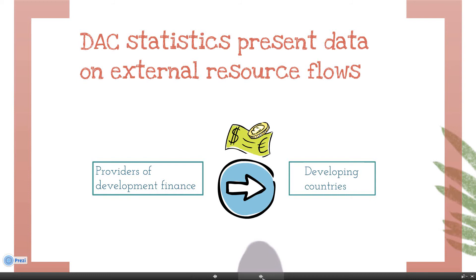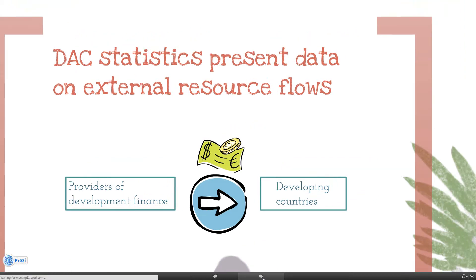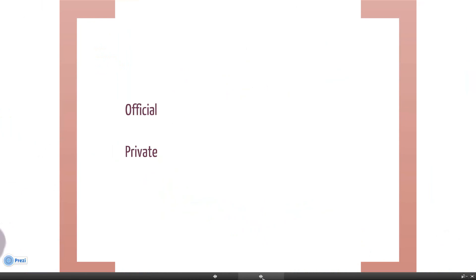DAC statistics distinguish between official and private sources, and concessional and non-concessional flows. Concessional flows are those extended at conditions below market rates.